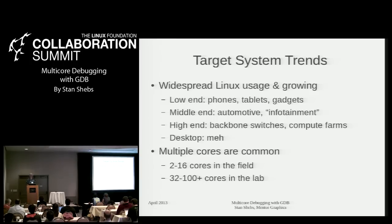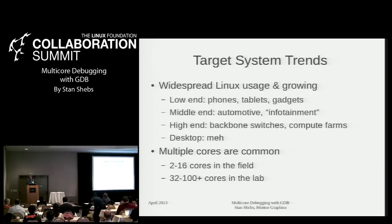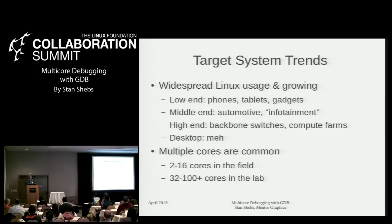As we saw yesterday, there are lots and lots of Linux targets — probably over a billion out there now. This goes from the low end: phones, tablets, gadgets; to the middle end: automotive infotainment systems which are more or less desktop-sized but not actual desktops; and then the high end: backbone switches and compute farms. Desktop Linux exists too — all the enthusiasts have it and nobody else does.